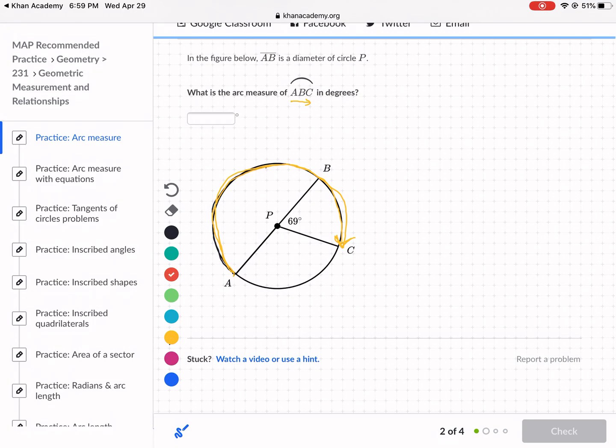Okay. So we want to find that measure. So the first thing we should recognize, if we have a diameter, that means that's 180. And then we're given that this is 69. I wanted to change this to green. This is 69. So we're going to add the two of these together. Because remember, this central angle corresponds to that measure, and then this central angle corresponds to that arc measure. So we need to do 180 plus 69, and that's going to be the measure of A, B, C.